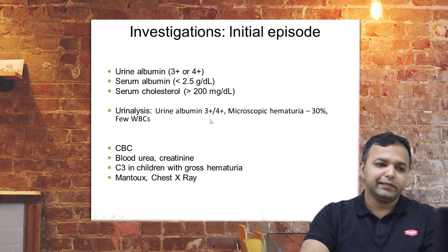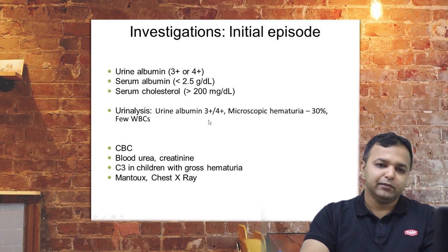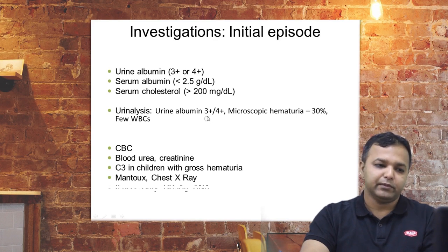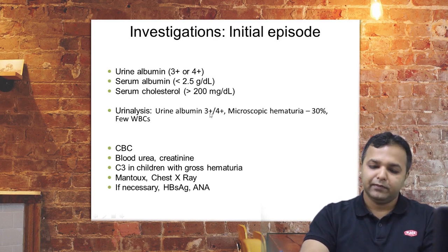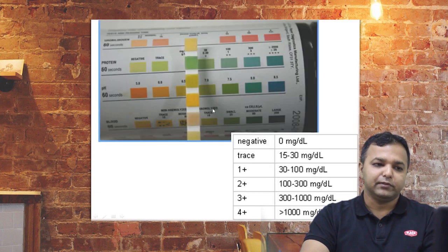We need to do a chest X-ray and Mantoux test because we have to start steroids, and this is an endemic zone for tuberculosis — we want to rule that out. If necessary, we would also do HIV, HBsAg, and ANA if clinical features are suggestive or if there is high risk, then we have to go for these tests as well.